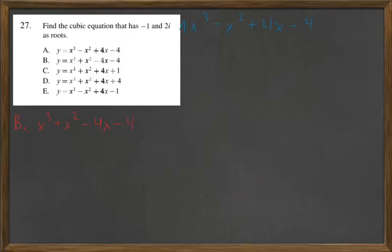This problem is probably one of the tougher ones you're going to encounter on the high set. It's find the cubic equation that has -1 and 2i as roots. So it's probably going to be really good to have quadratic equations and factoring down.